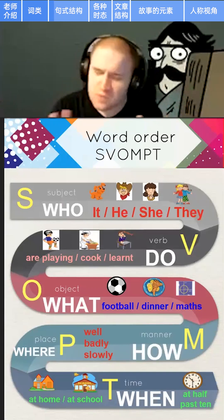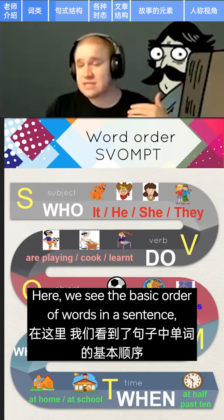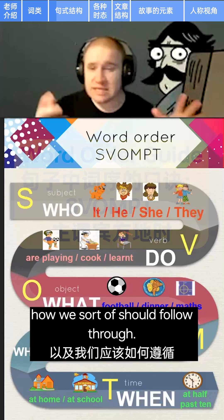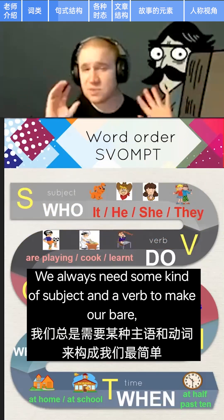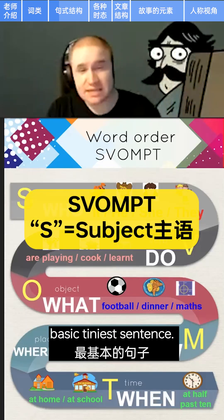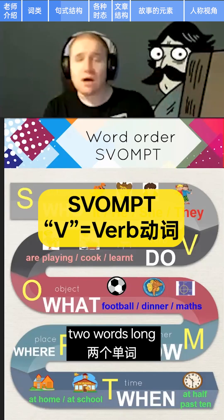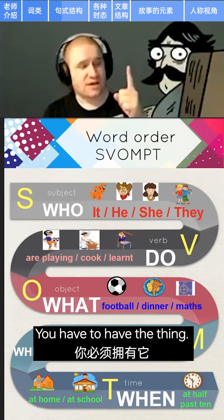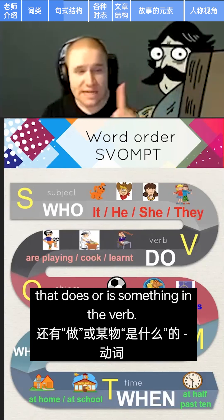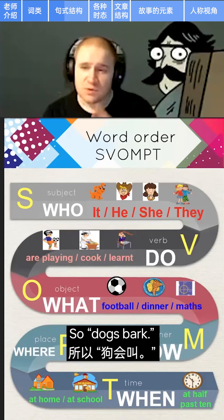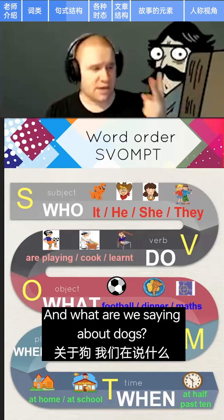In that period we also take a look at things like news articles, journals, and try to do narrative writing or personal narratives — those are two different things, but at the same time they're almost the same. We'll discuss how they're similar and different. Here we see the basic order of words in a sentence. We always need some kind of subject and a verb to make our bare basic sentence — the smallest possible complete sentence you could make is two words long: a noun and a verb.